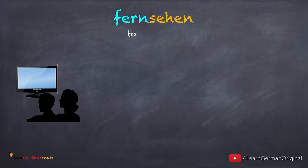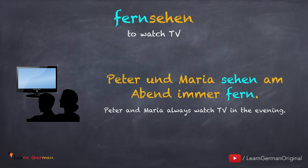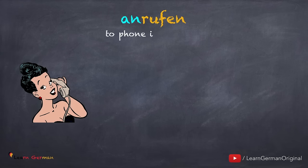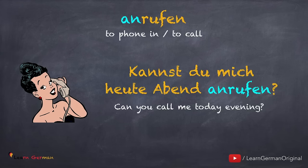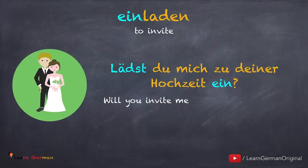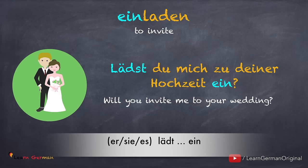The next verb is 'fernsehen' — the prefix is 'fern'. Example: 'Peter und Maria sehen am Abend immer fern.' Next is 'anrufen' — the prefix is 'an'. Example: 'Kannst du mich heute Abend anrufen?' Here again, since the sentence uses a modal verb, the trennbares Verb is at the end and not conjugated. The next verb is 'einladen' — the prefix is 'ein'. Example: 'Lädst du mich zu deiner Hochzeit ein?' Note that 'laden' is an irregular verb.